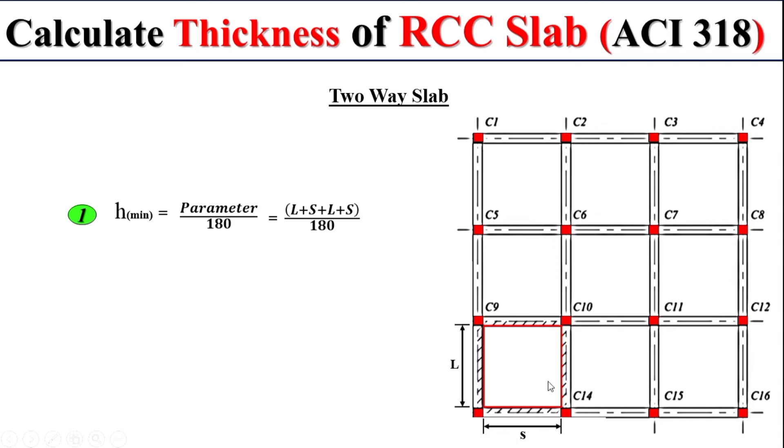In this case we take L plus S plus L plus S, and we divide this whole parameter by 180. After the calculation it will give you the thickness of the slab. Remember, this formula is very rare in practice. Normally we divide this parameter by 160.